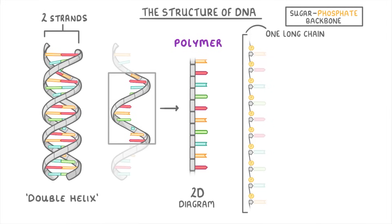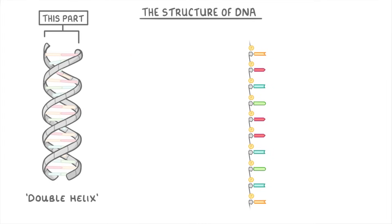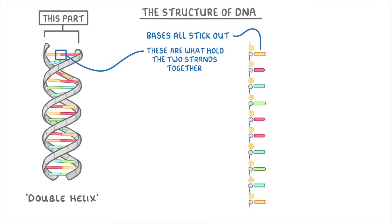If we look back at our full DNA molecule over on the left, the sugar phosphate backbone is this outside part. It's effectively forming a protective outer casing around those bases in the middle. If we look back at our single long chain though, you can see that all the bases stick out to the side, and these are what hold the two strands in the double helix together.